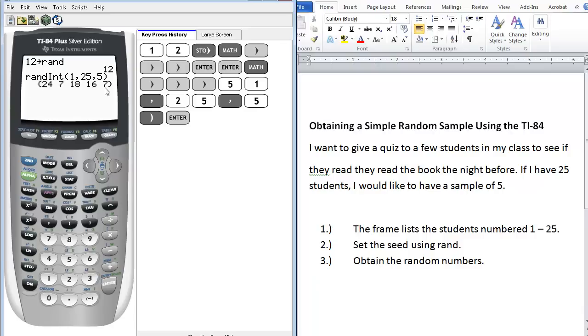Here we want sampling without replacement. So I need one more student to select. I can either rerun this statement and see the different numbers that they give me, or I can just select one more integer.